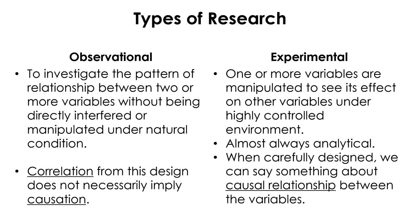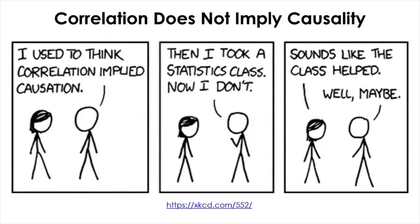However, when a notable relationship is observed between variables in both observational and experimental design, it is only the experimental design that can say something about the causal relationship between the variables, assuming the experimental study is carefully controlled. You cannot suggest this kind of causation from the seemingly same result of an observational study, for several reasons we will see later. For now, just remember that correlation between two variables does not necessarily mean they are causally related, even though strong correlation is a necessary condition for a causal relationship.